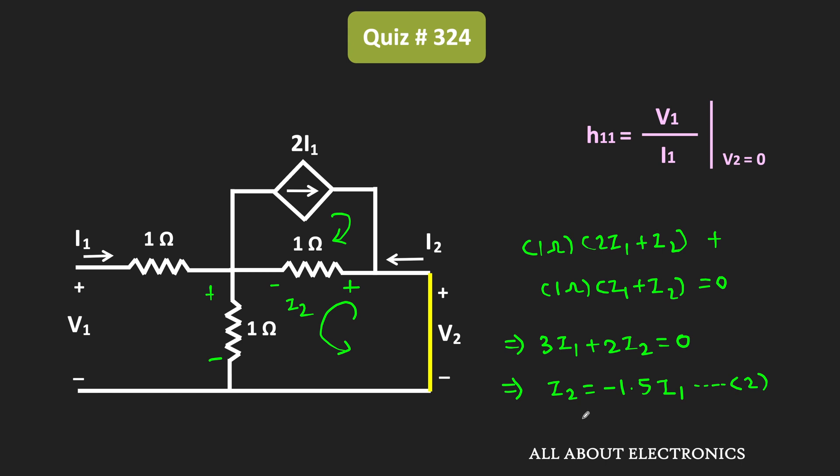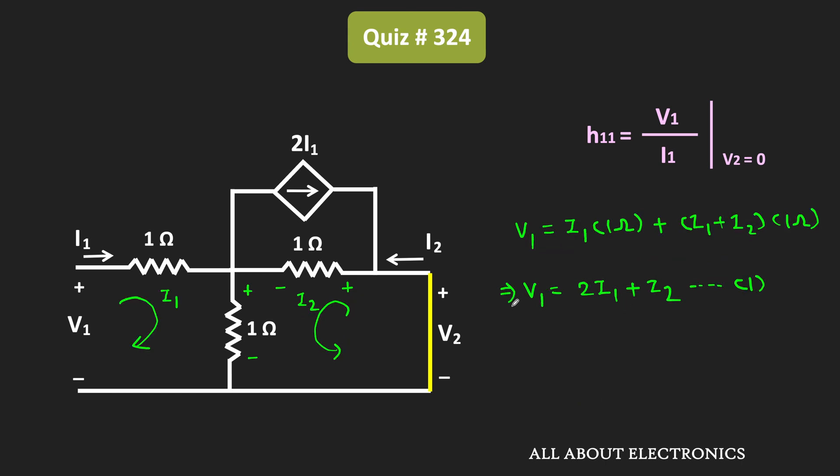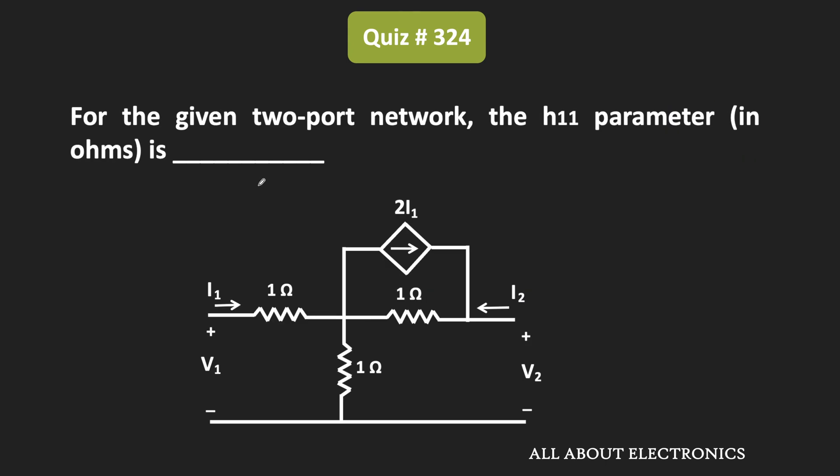So let us put the value of this I2 in the first expression. So we can say that V1 is equal to 2I1 plus I2, that is minus 1.5 times I1. That means V1 divided by I1 is equal to 0.5 ohm. Or we can say that H11 is equal to 0.5 ohm. That means for the given two-port network, this parameter H11 is equal to 0.5 ohm.